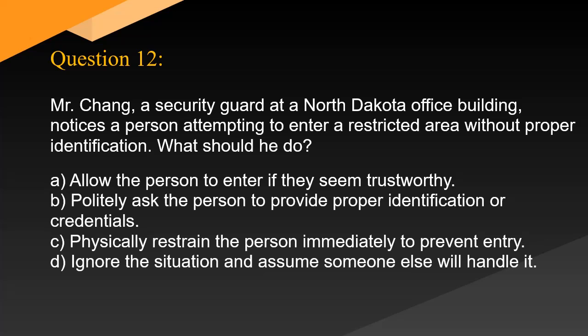Question 12. Mr. Chang, a security guard at a North Dakota office building, notices a person attempting to enter a restricted area without proper identification. What should he do? A: Allow the person to enter if they seem trustworthy. B: Politely ask the person to provide proper identification or credentials. C: Physically restrain the person immediately to prevent entry. D: Ignore the situation and assume someone else will handle it.